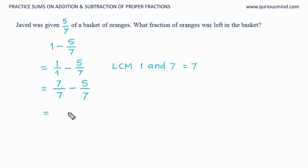And that gives an answer. It will be denominator 7 because denominators are same here, and then perform operation on numerator: 7 minus 5 is 2. So 2 upon 7 oranges were left in the basket.